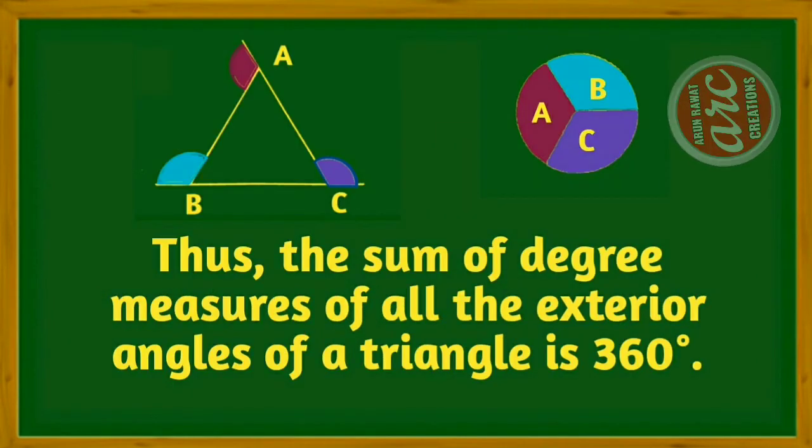Thus, the sum of degree measures of all the exterior angles of a triangle is 360 degrees.